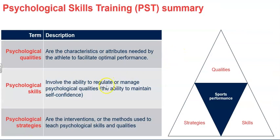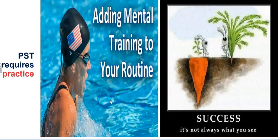To summarise the language you need to be mindful of: the qualities are the things athletes need to have, such as motivation, controlled arousal levels, self-esteem, and self-confidence. The skills are what we want them to use — the ability to manage those qualities to an optimal level. And the strategies or interventions are what you'll recommend they use to learn those skills and make those qualities optimal. These things need practice and must be part of a mental training and psychological skills training routine, ongoing before, during, and after performances.